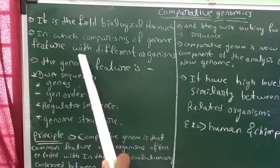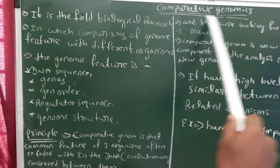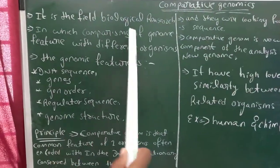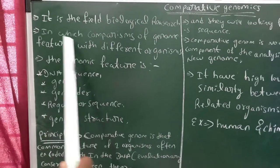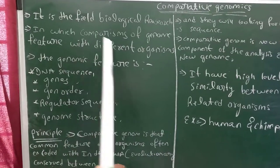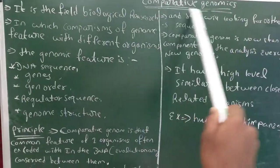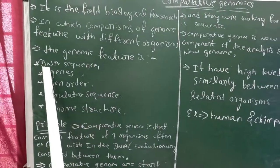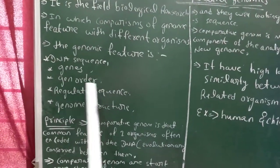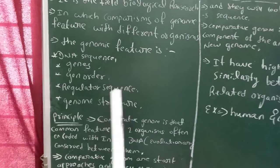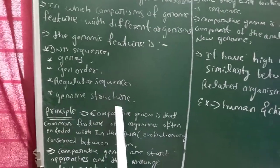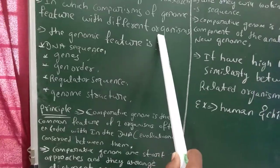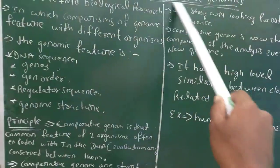The comparison of genome features with different organisms is called comparative genomics. What are the genome features? First, DNA sequence, gene order, and regulatory sequences — the comparison of all these characters with different organisms is called comparative genomics.